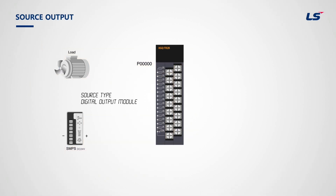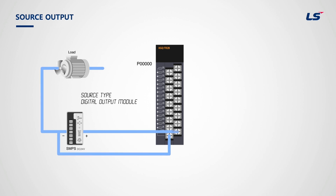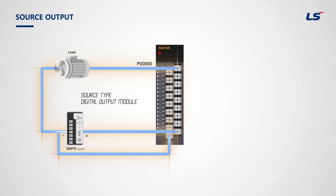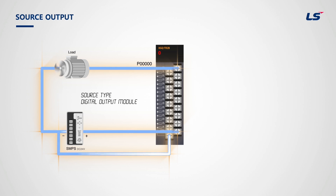This is the source type digital output module. The COM terminal for the source type output module is connected to the DC 24 voltage power source. Further details can be found in the user's manuals. I'll see you in the next lecture.